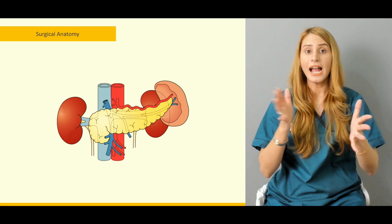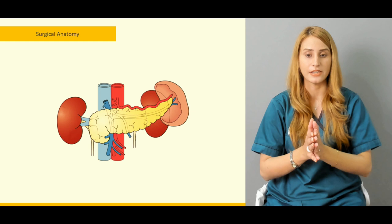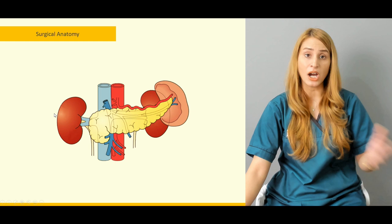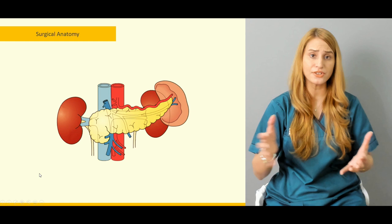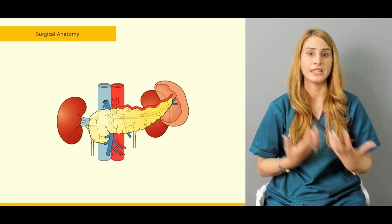If we divide the abdomen into nine quadrants, the pancreas is located in the central epigastric region. Looking at the diagram, you can see the right and left kidneys, the inferior vena cava on the right, and the aorta on the left — these two main vessels are situated behind the pancreas.